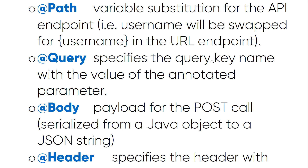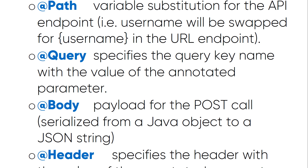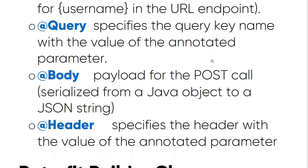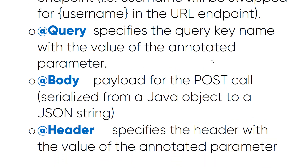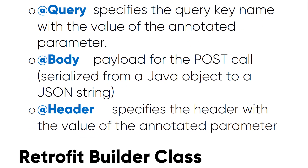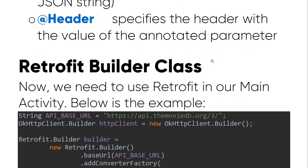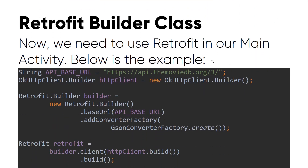The @Body annotation provides the payload for a POST call, serialized from a Java object to a JSON string. The @Header annotation is used to specify a header with the value of the annotated parameter. However, we are going to mainly use the @Query and @Path annotations in our examples.